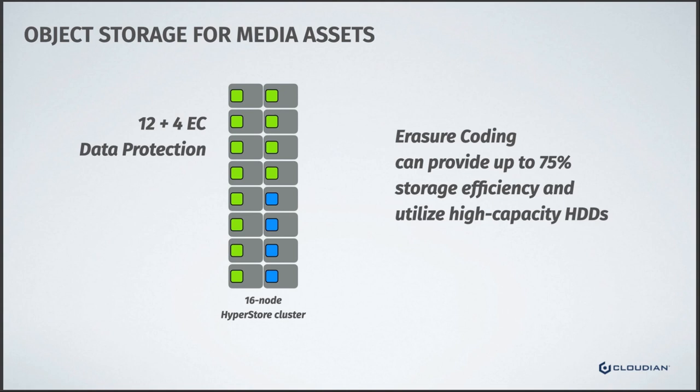The RAID wall has real implications for your long-term footprint, power, and data center space. With object storage, you can use the latest drives — currently around 16 to 18 terabytes, and projections show drives going up to 25 to 30 terabytes per drive by 2025. Not being able to leverage those higher-capacity drives is actually a really big deal in the industry.